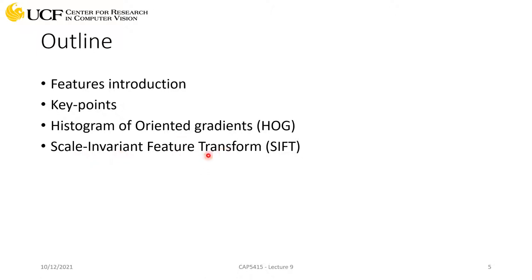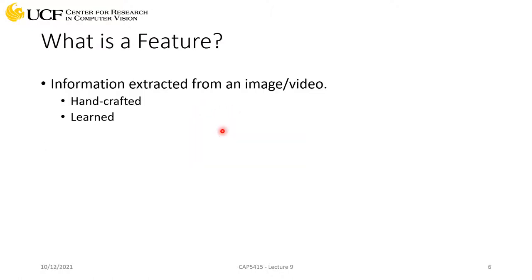Keypoints are the first type of features we'll learn. It will be a bit complicated with a lot of math involved — it's a very classical way of extracting features. We will not go into a lot of mathematical detail, since we don't want to do derivations in this course.